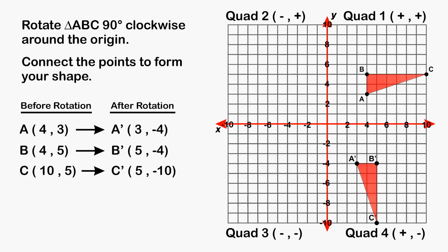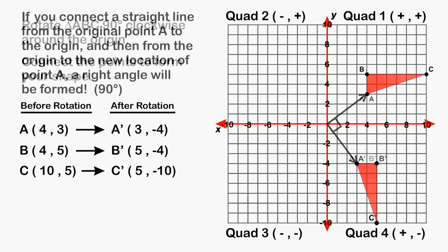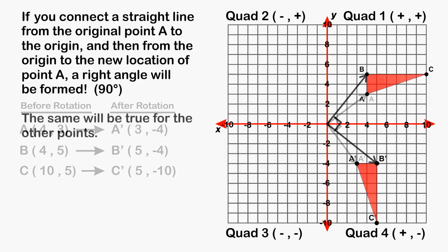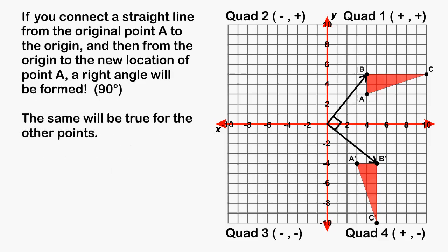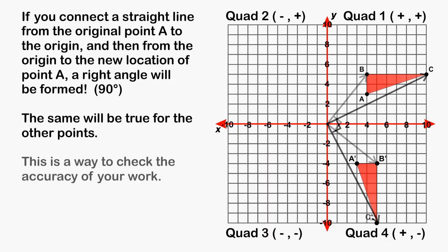One thing we can note after doing our rotation is that if we were to connect a line from point A to the origin, and then from the origin to the new location of point A, a 90 degree angle would be formed. The same should be true for the other points — drawing a line from the original location of point B to the origin, and from the origin to the new location of point B, we would also have a right angle. And the same thing holds true for point C. So if you are performing a 90 degree rotation, you can use this to verify that you rotated your shape to the correct location.